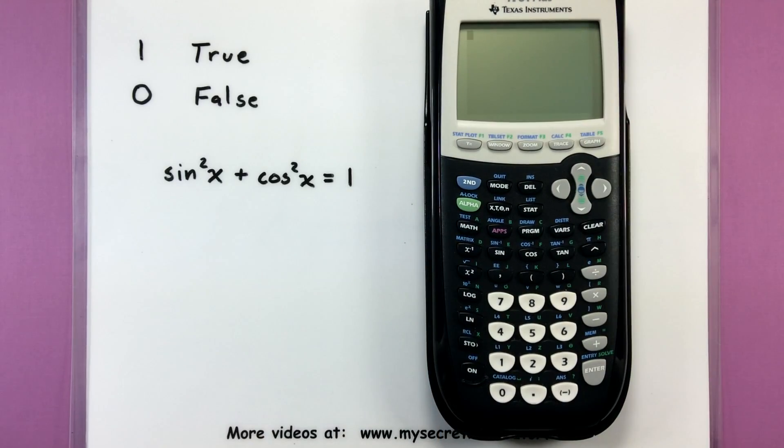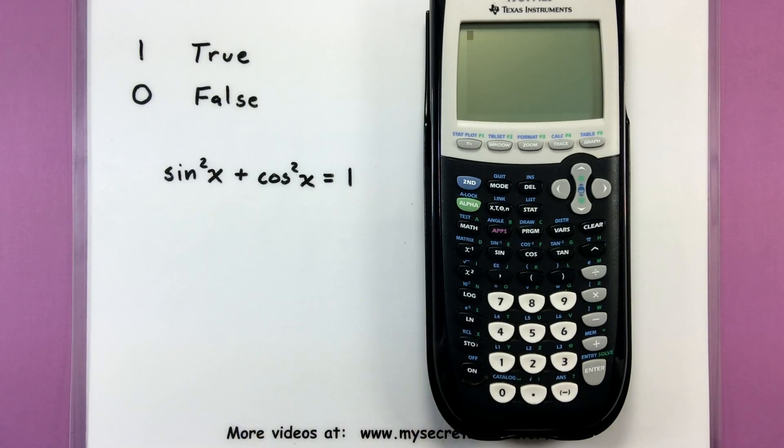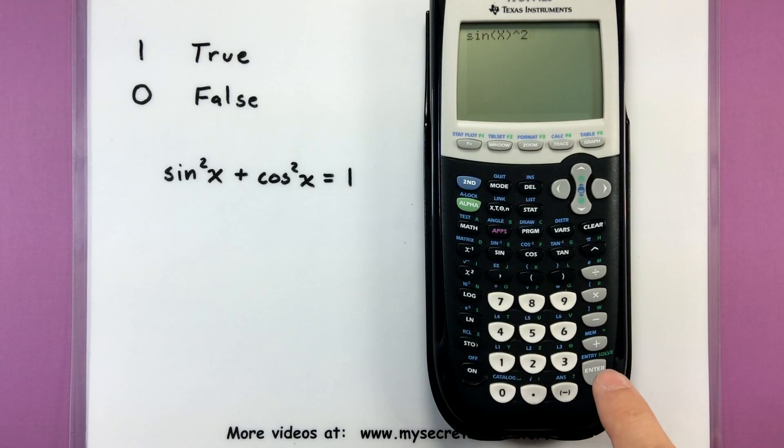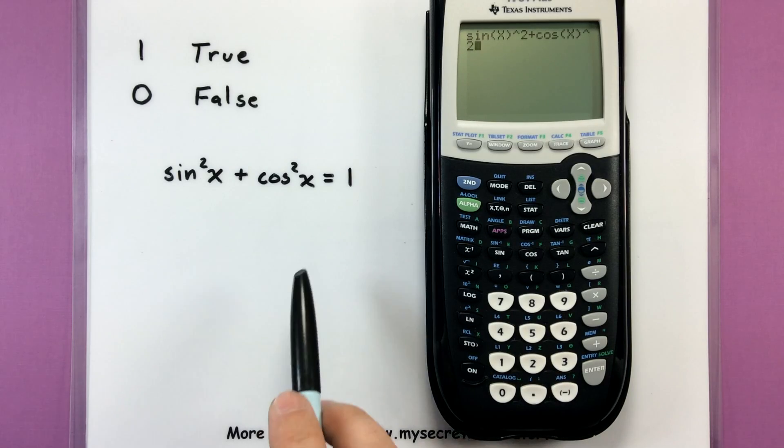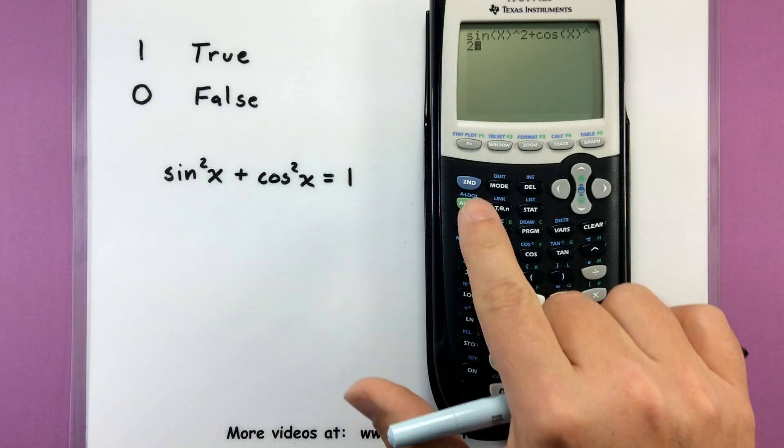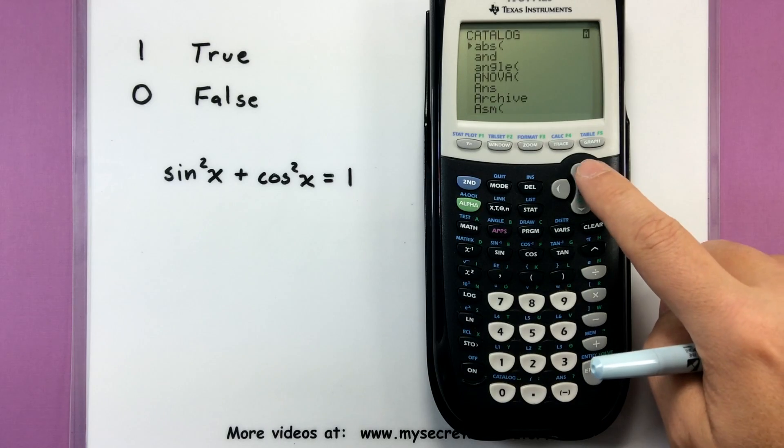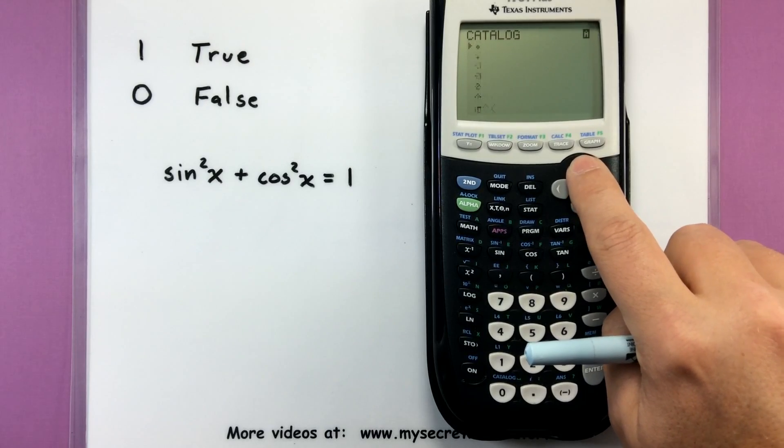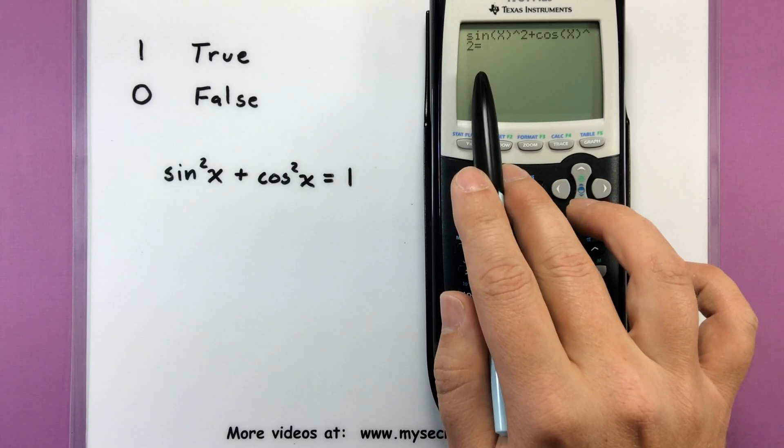But maybe we're not quite sure and we can use the calculator to help us verify that it is indeed true. So watch how this works. I'm going to grab our calculator here. What you want to do is enter in one side of the equation. So I'm going to type in sine of x squared plus cosine of x squared. And then I'm going to find the equal sign in my catalog. So second catalog, there's lots of stuff in here, all the features that the calculator can do. And if I scroll up, I will eventually find an equal sign.